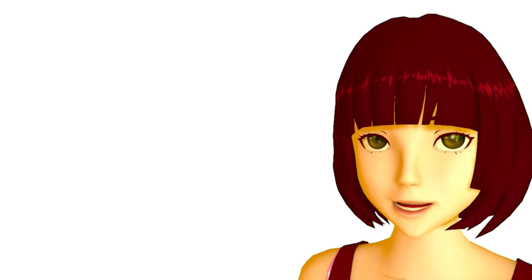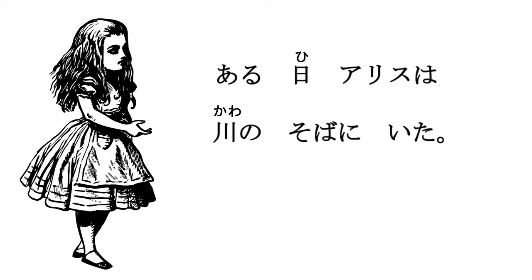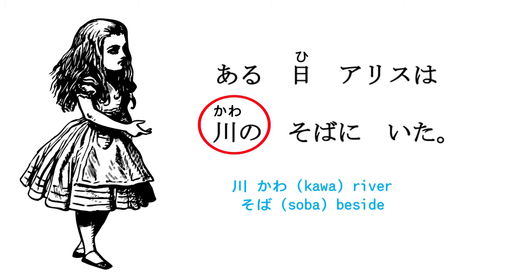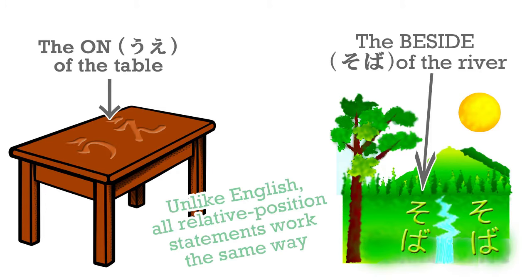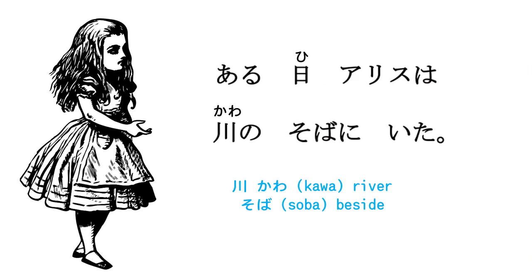Now let's go into a story that I believe we all know. Aruhi arisu wa kawano soba ni ita. This is a simple sentence. The word kawa means river, and soba means beside — and it's a noun. So kawano soba is 'the beside of the river,' just as we put something on the 'on' of the table or the 'under' of the table, and we always mark it with ni. So the beside of the river is where Alice was. Aru means 'a certain,' so aruhi is like 'one day' or 'a certain day.'